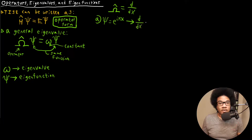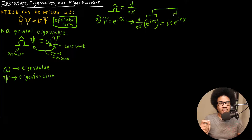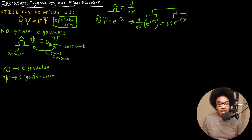If we take the first derivative of e^(ikx), that's going to be equal to ik times e^(ikx). Since i and k are both constants, we do end up with that same function back again. Because we get the same function on both sides, e^(ikx) is an eigenfunction of this operator — so that one is yes.